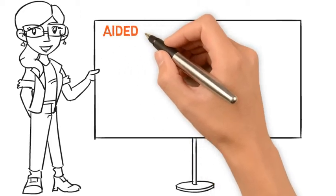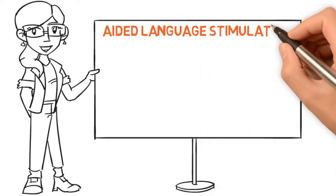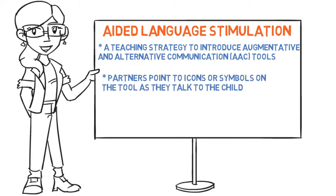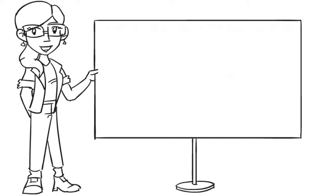Children learn to speak by listening to the people around them speak. They need models to help them learn and to improve their speaking and understanding skills. Aided Language Stimulation is an approach of teaching someone how to use an Augmentative Communication System by modeling how to use it. The goal is to create an environment in which the AAC user can learn from others how to use their communication system.